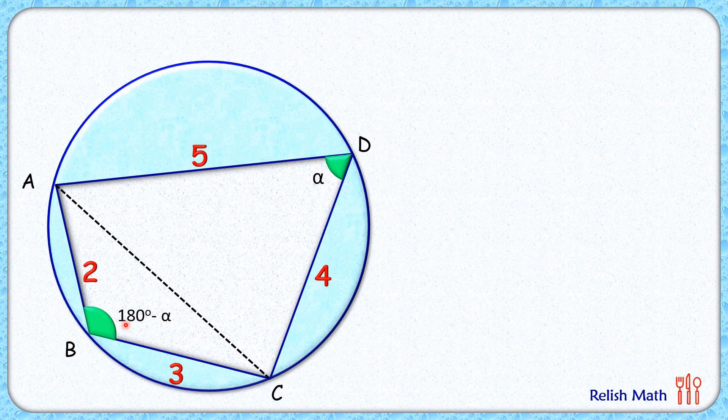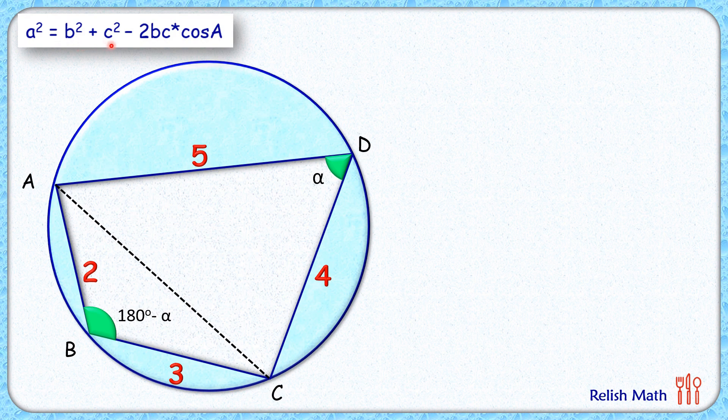To proceed further, we'll use the cosine rule, which states that in a triangle with sides A, B, and C, A squared is B squared plus C squared minus 2BC cos A, where A is the angle opposite to side length A.